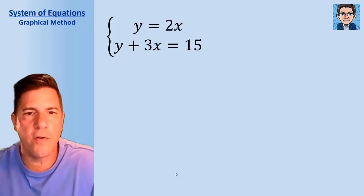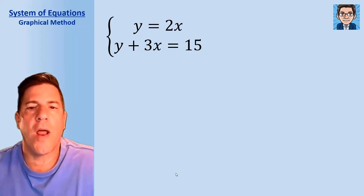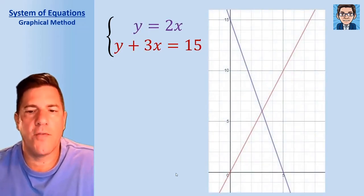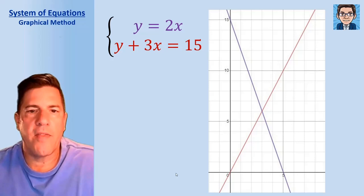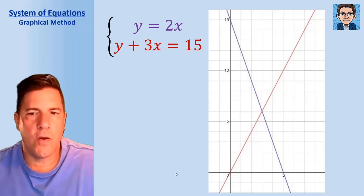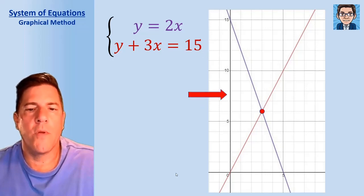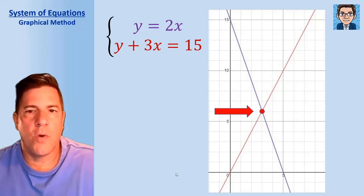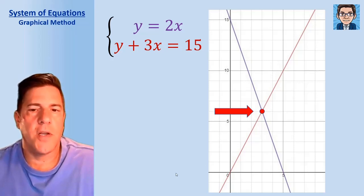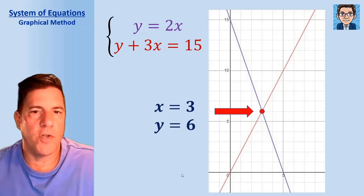Let's look first at the graphical solution of a system of equations. If we graph these two lines — the first one in purple and the second in red — every point on the purple line makes the first equation true, and every point on the red line makes the second equation true. There's only one point that makes both true: where they intersect. For this system, that solution is x equals 3 and y equals 6.